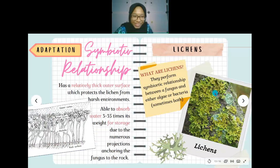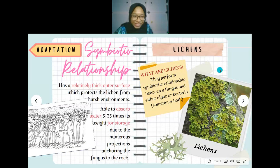The last plant is lichen. Lichens perform a symbiotic relationship between a fungus and algae or cyanobacteria. The fungus has a relatively thick outer surface that protects lichens from harsh environments such as strong waves. The fungus can also absorb water 3 to 35 times its own weight for storage, due to numerous projections into the rock.